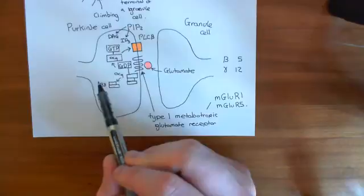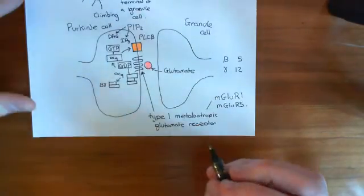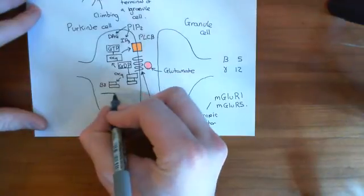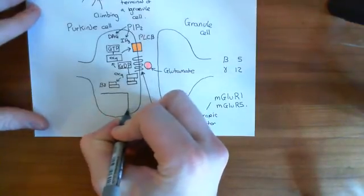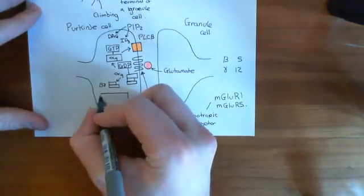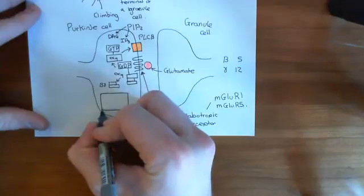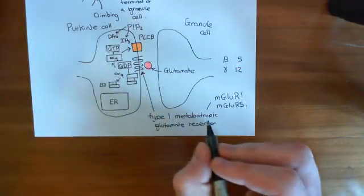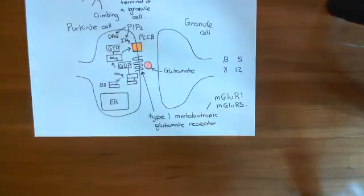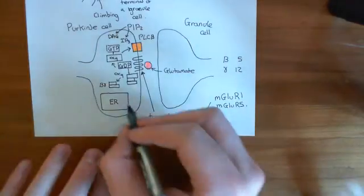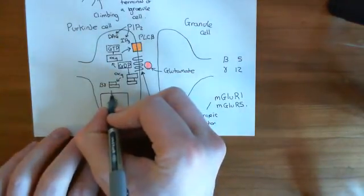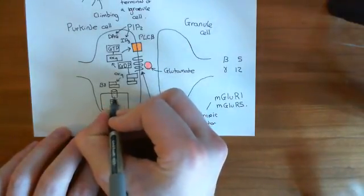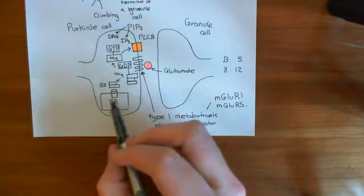IP3's activity is to go to the endoplasmic reticulum. We'll draw the endoplasmic reticulum here. In the membrane of the endoplasmic reticulum, there are IP3 receptors. IP3 receptors consist of four subunits, and there are three different genes coding for polypeptides that can be used in building an IP3 receptor.